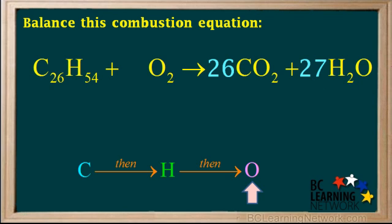Now we'll balance the oxygen atoms. There are 2 times 26, or 52 oxygens in the CO2. And 1 times 27, or 27 oxygens in the water. So we have a total of 52 plus 27 equals 79 oxygens on the right side. So we need 79 oxygens on the left side to balance the oxygens.